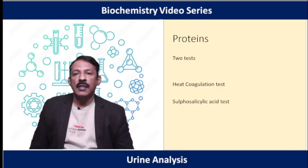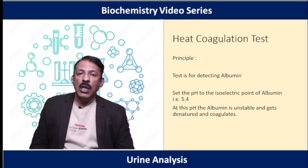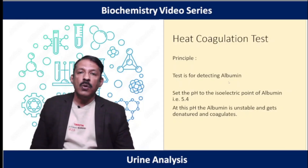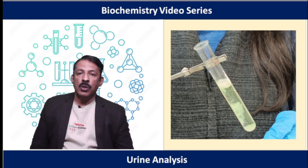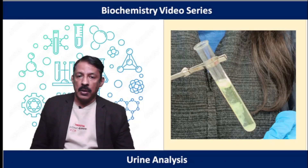There are two tests for detecting proteins. The heat coagulation test is specific for albumin. We set the pH of the urine to 5.4, which equals the isoelectric pH of albumin. At this pH, when we heat the urine, albumin coagulates and becomes visible. We add a few drops of acetic acid to acidify the urine, then heat the top end of the test tube. If a coagulum develops, albumin is present. Other proteins like hemoglobin will not give this test.